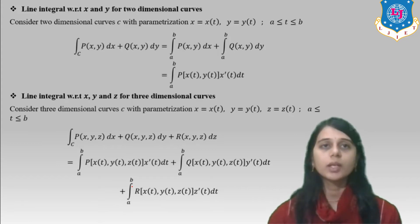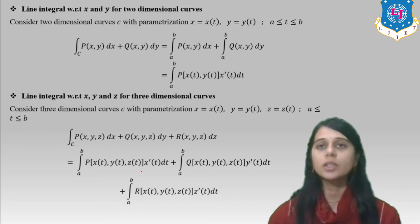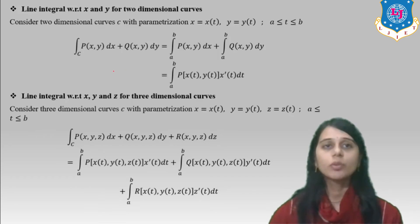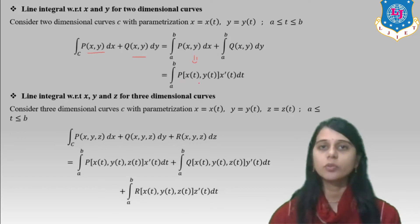Line integral with respect to x and y for a two-dimensional curve: consider a two-dimensional curve with parametrization x = x(t), y = y(t), where t is from a to b. The integrals of P(x,y) dx and Q(x,y) dy are given individually from a to b as P(x(t), y(t)) · x′(t) dt and similarly Q(x(t), y(t)) · y′(t) dt.